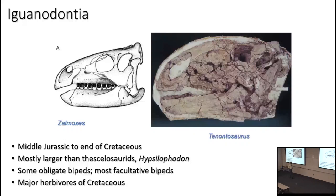Iguanodontia is basically everything closer to Iguanodon than to Hypsilophodon. This group has a good fossil record starting in the Middle Jurassic all the way through the end of the Cretaceous. By and large, iguanodonts were bigger than earlier ornithopods — the biggest earlier ornithopods, including the festival-of-sorids and Hypsilophodon itself, were in the two-to-four meter range. Like all ornithopods discussed so far, early branches started as obligate bipeds, carrying forward the ancestral dinosaurian bipedal condition.